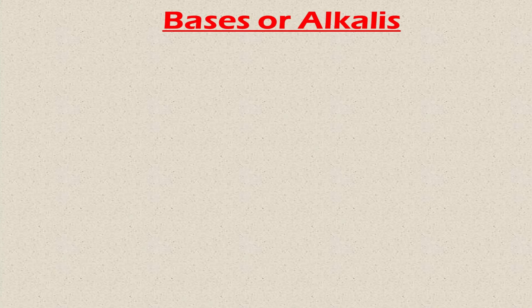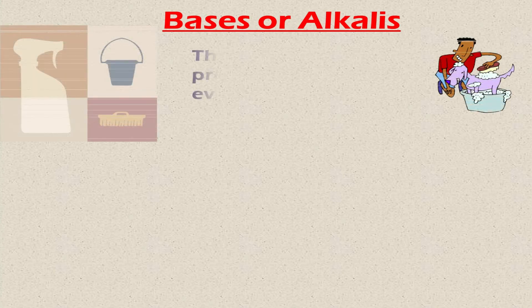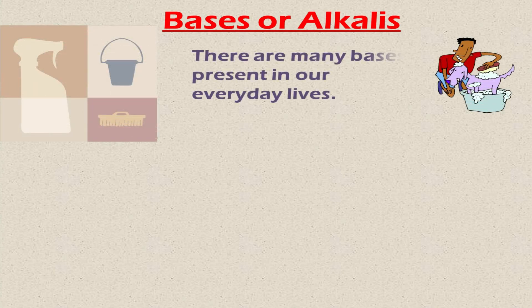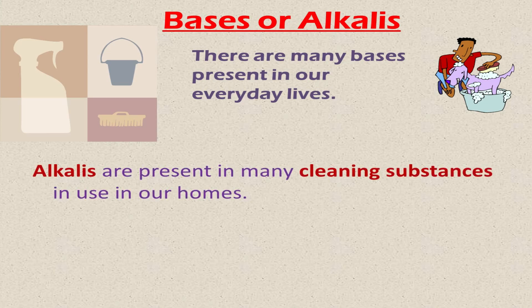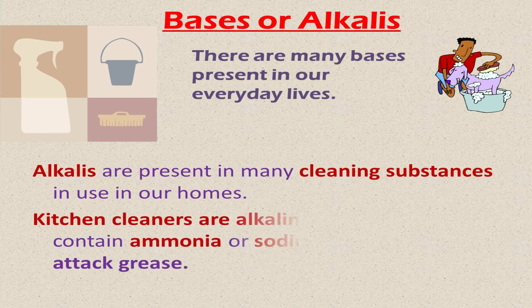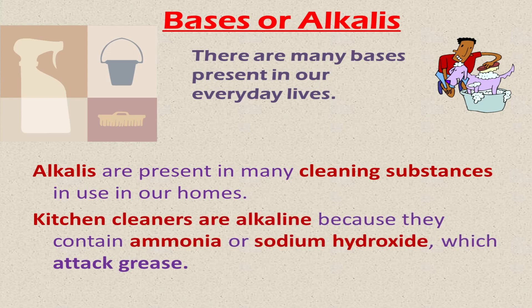Bases or alkalis — there's a difference between them. In alkalis, only metals of Group 1A or Group 2A, alkali metals or alkaline earth metals, are present. There are many bases present in our daily life. Alkalis or bases are present in many cleaning substances which we use daily. For example, kitchen cleaners are alkalis because they contain ammonia or sodium hydroxide, which attack grease and are basic in nature.